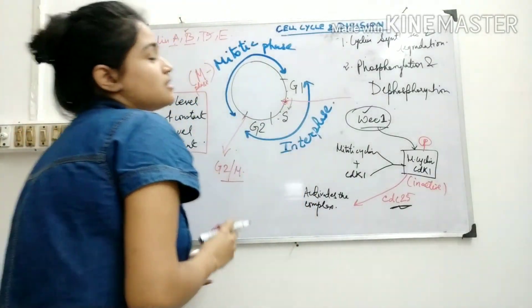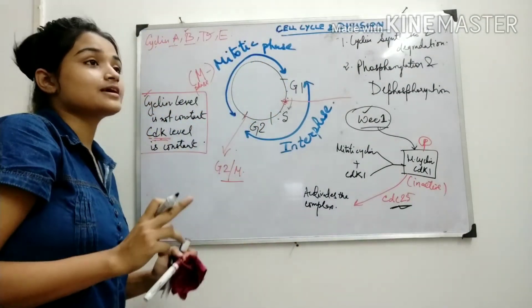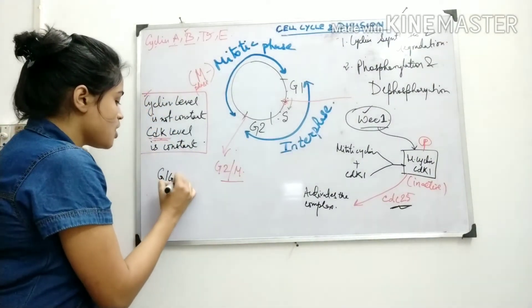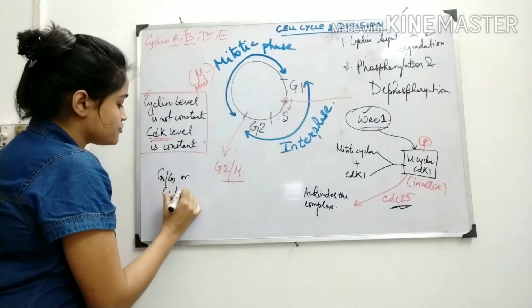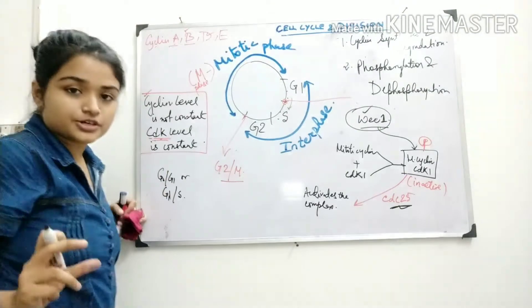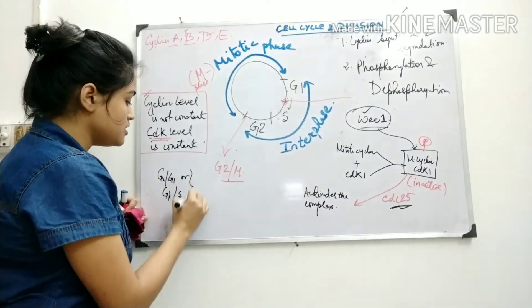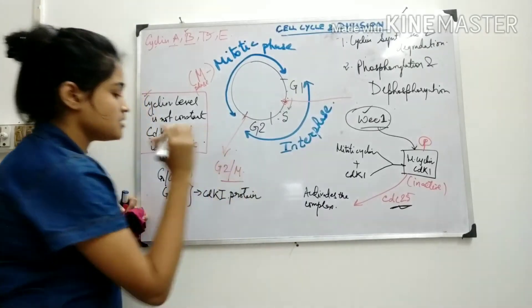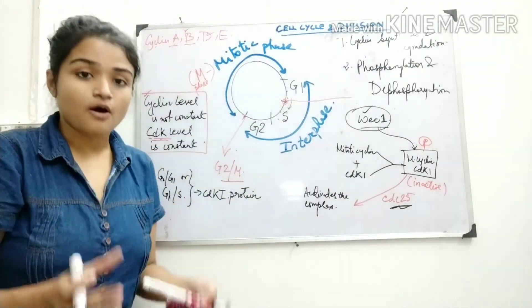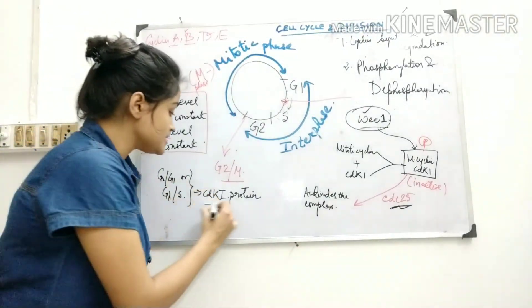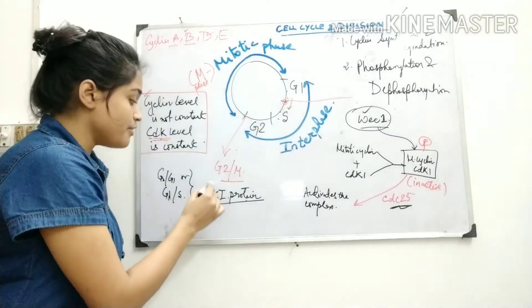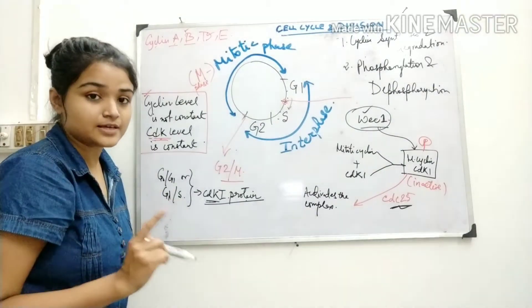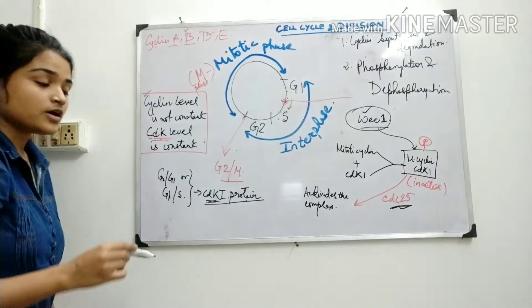The third mechanism involves CDK inhibitor proteins (CKIs), which act at certain transitions like G0/G1 or G1/S. At these transitions, if there is any defect or abnormality, these inhibitor proteins inhibit the activity of CDK. They cannot decrease the CDK level — since CDK level is constant — but they can inactivate CDK activity.